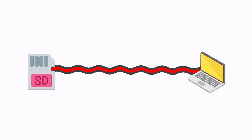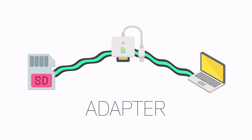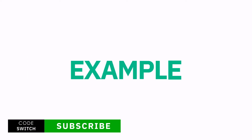To better understand it, let's take an example. Say you have a memory card with some photos and you want to move those photos from the SD card to your computer, but your computer doesn't have an SD card slot. What you can do is use a card adapter — its input is compatible with the memory card and its output is compatible with the computer. It resolves the compatibility issue, and this is exactly what the adapter pattern tries to do.